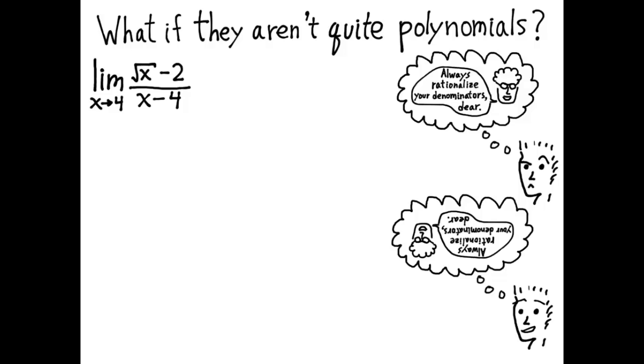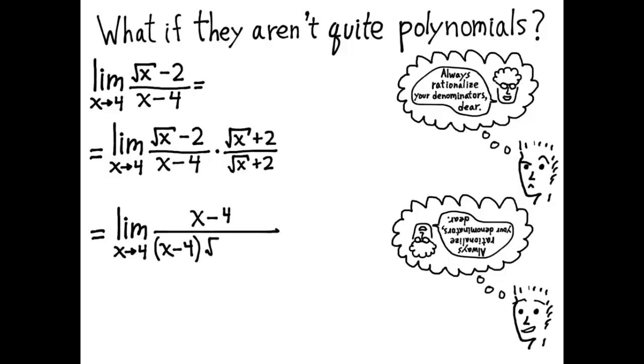So if you try that in this case, for example, then you would take the expression and multiply it by square root of x plus 2 over square root of x plus 2. And the numerator becomes x minus 4. In the denominator, I will not multiply out the x minus 4, because I want to keep that factored so I can cancel it. And then I have a zero over zero problem I can cancel.